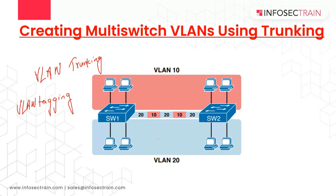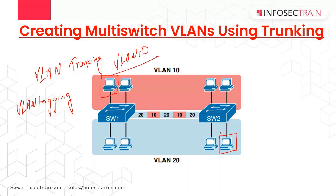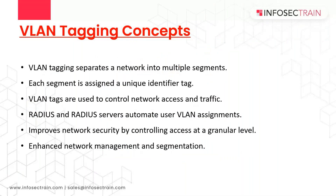For example, if VLAN 10 is on switch one and a device is sending data toward VLAN 20 on switch two, a header must be added. That header will contain the VLAN ID — indicating VLAN 20 — so the data reaches the right segment. VLAN tagging separates the network into multiple segments; each segment is assigned a unique identifier tag, and VLAN tags are used to control network access and traffic.